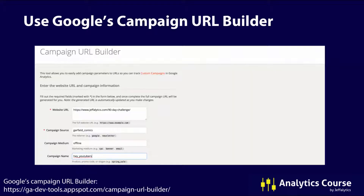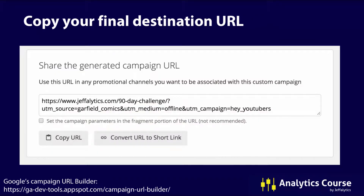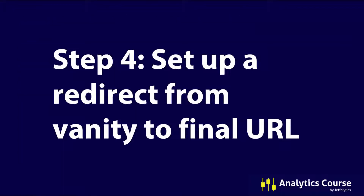Step three: add UTM parameters to your destination URL. Go to Google's Campaign URL Builder at the link below, then enter your final destination page as the website URL, along with the campaign source, medium, and campaign name. It will generate a tracking URL. For example, I set the source as Garfield comics, the medium as offline, and the campaign as 'hey youtubers.' Once your parameters are set, generate and copy the URL to your clipboard.